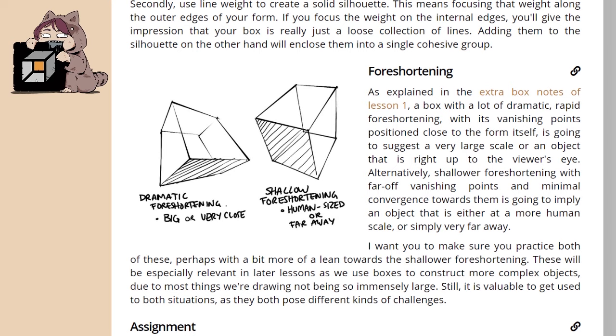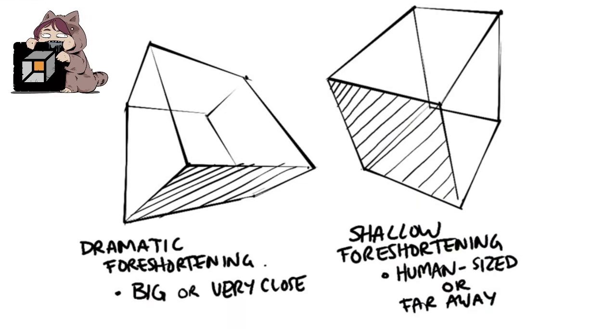Now foreshortening. As explained in the extra box notes of Lesson 1, a box with a lot of dramatic, rapid foreshortening with its vanishing points positioned close to the form itself is going to suggest a very large scale or an object that is right up to the viewer's eye. Alternatively, shallower foreshortening with far-off vanishing points and minimal convergence towards them is going to imply that an object is either at a more human scale or simply far away. I want you to make sure you practice both of these, perhaps with a bit more of a lean towards the shallower foreshortening. These will be especially relevant in later lessons as we use boxes to construct more complex objects, due to most things we're drawing not being so immensely large. Still, it is valuable to get used to both situations as they both pose different kinds of challenges. So the left has the dramatic foreshortening and the right has the shallow.